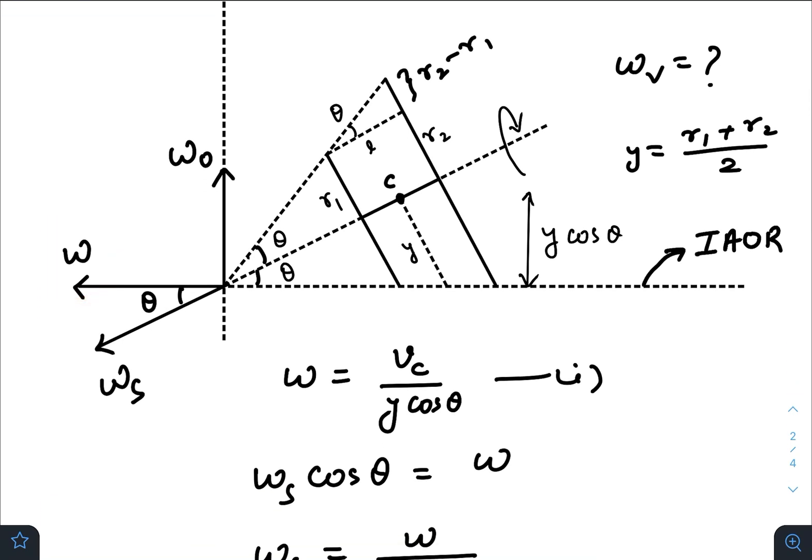Now if I consider ω is the angular velocity with respect to the instantaneous axis of rotation, they have already provided the velocity of the center of the rod. Now if we want to write ω as a function of this velocity at the center of the rod, we must write ω equals to vᴄ divided by the perpendicular distance from this axis, right?